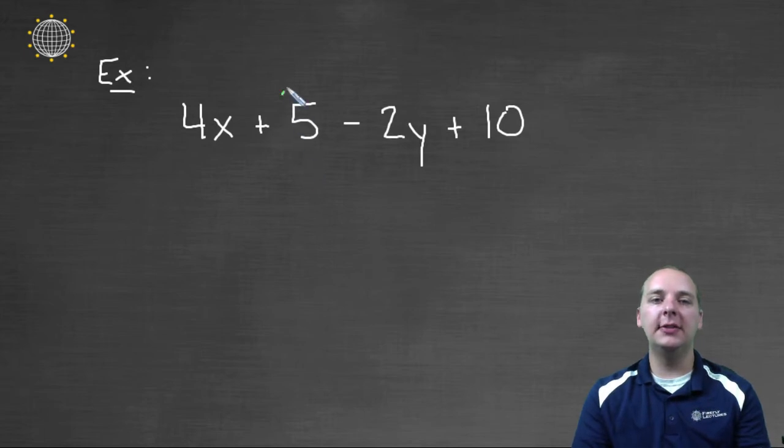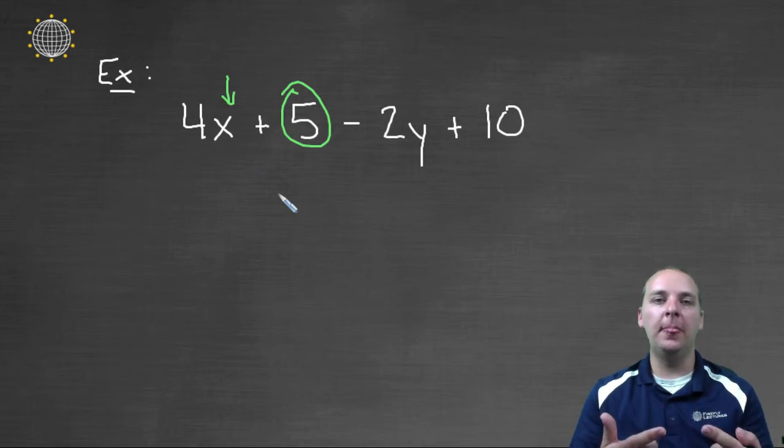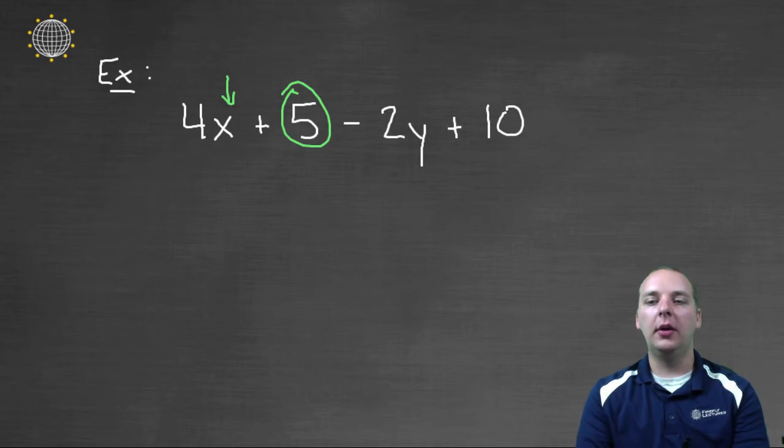Because this five right here doesn't have an x, like the four x does. So if they don't have the same variable with the same power, you can't add them, you can't call them like terms.